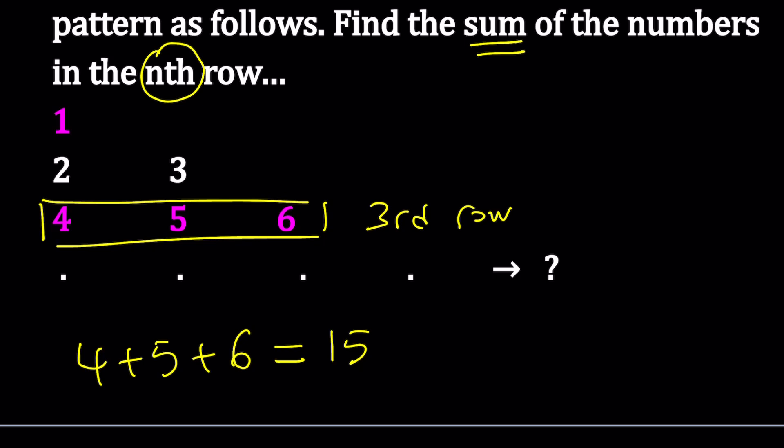The strategy is as follows: to find the first number in a particular row, we can look at the previous row and focus on the last number. In this case, the previous row is the second row, and the last number is 3. So one more than that gives us our first number in the next row.